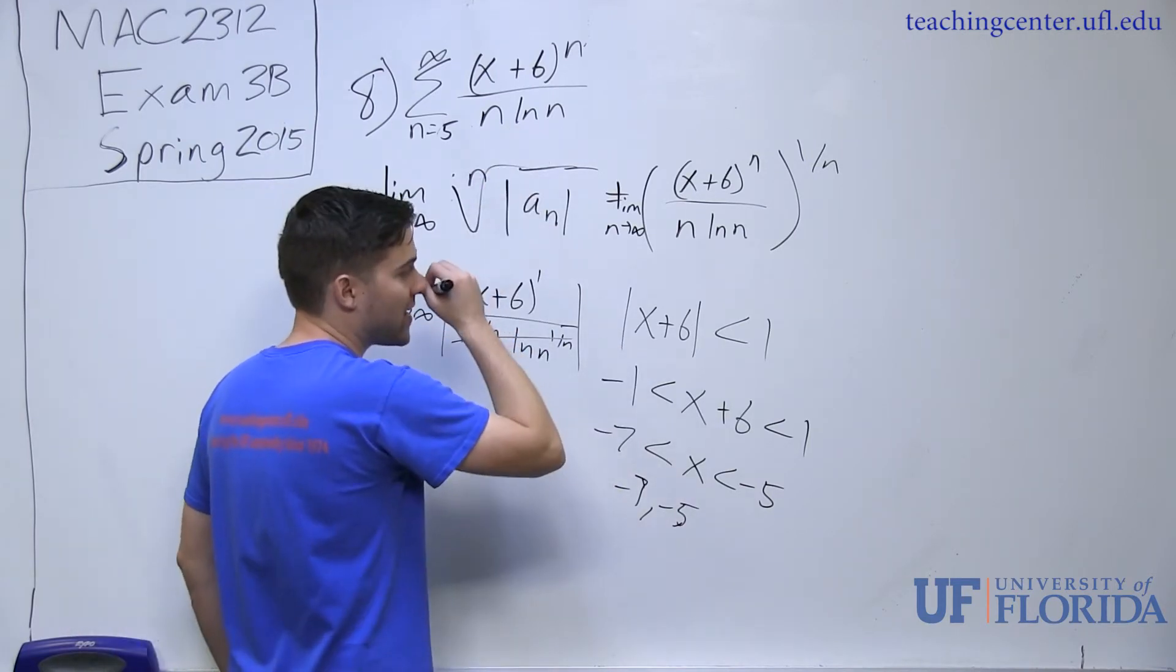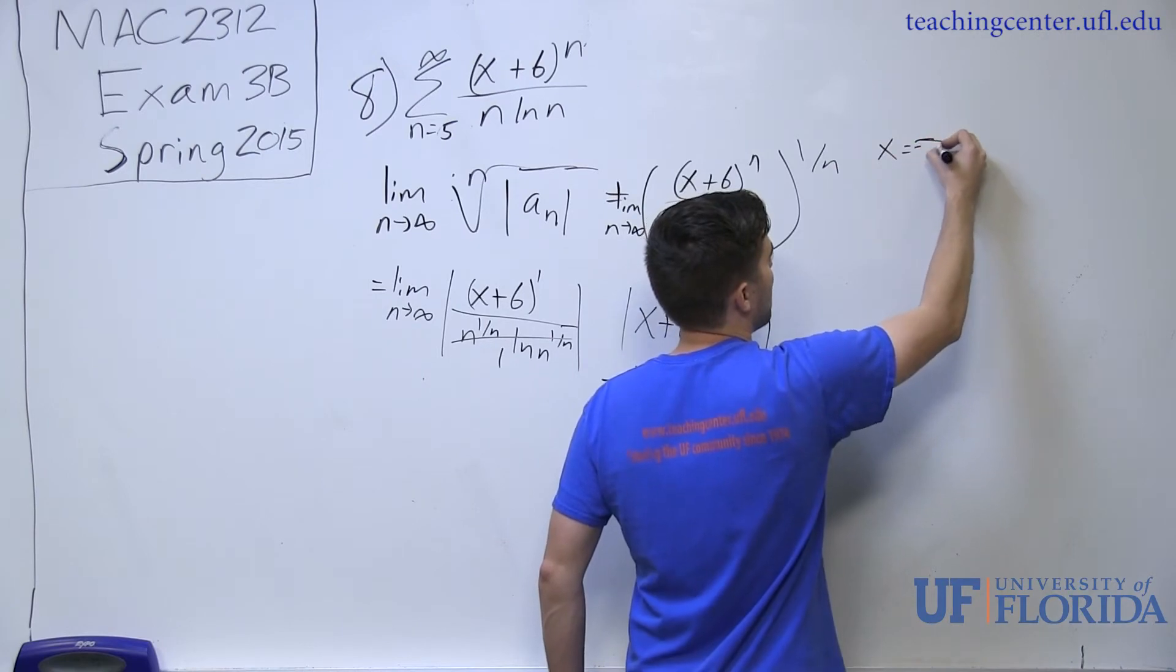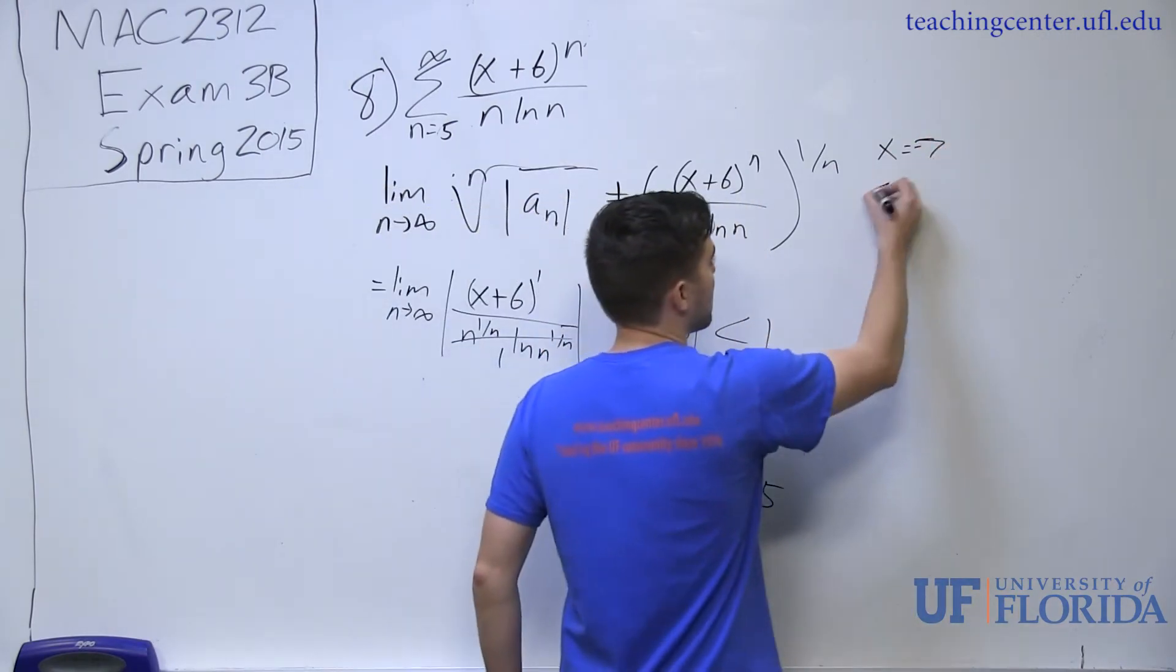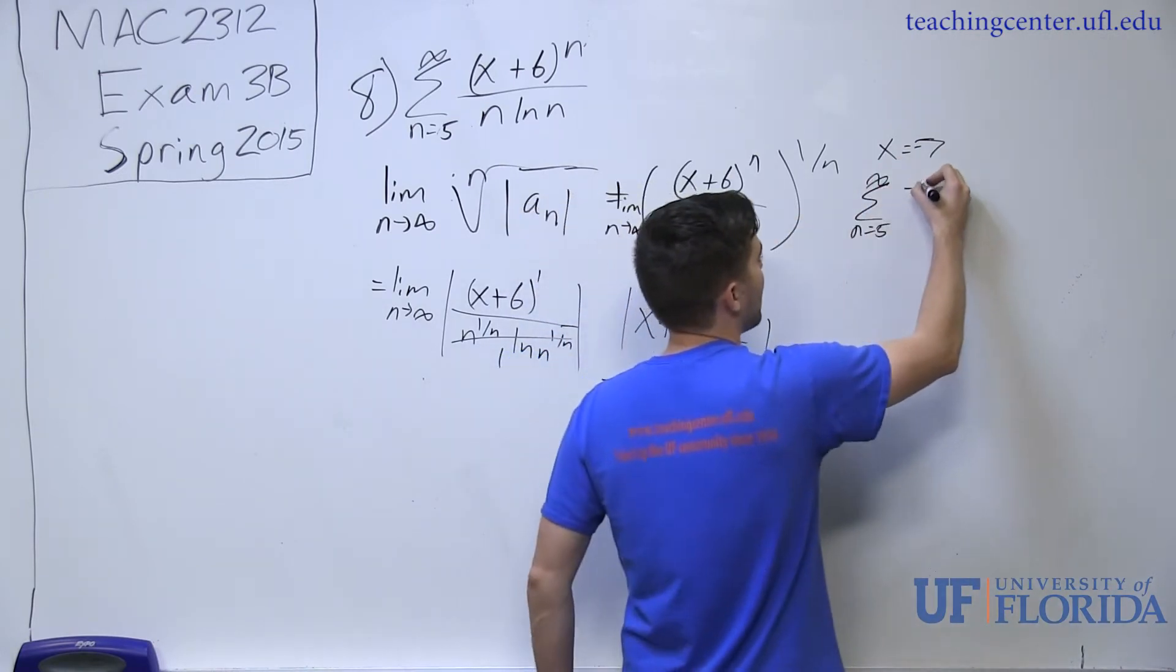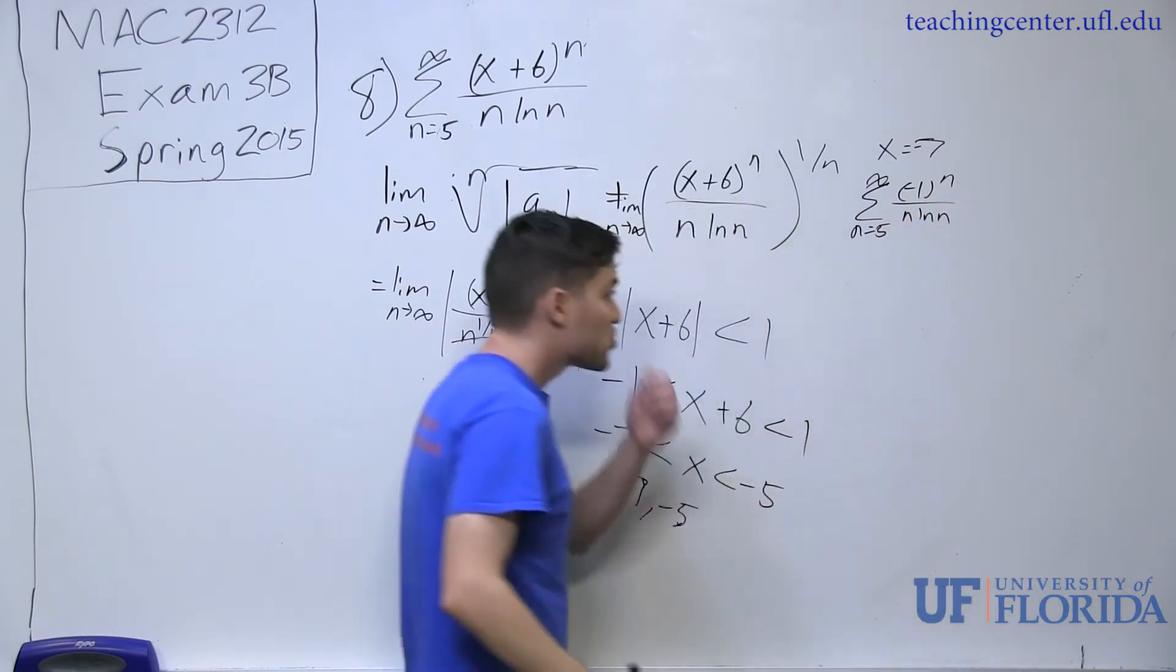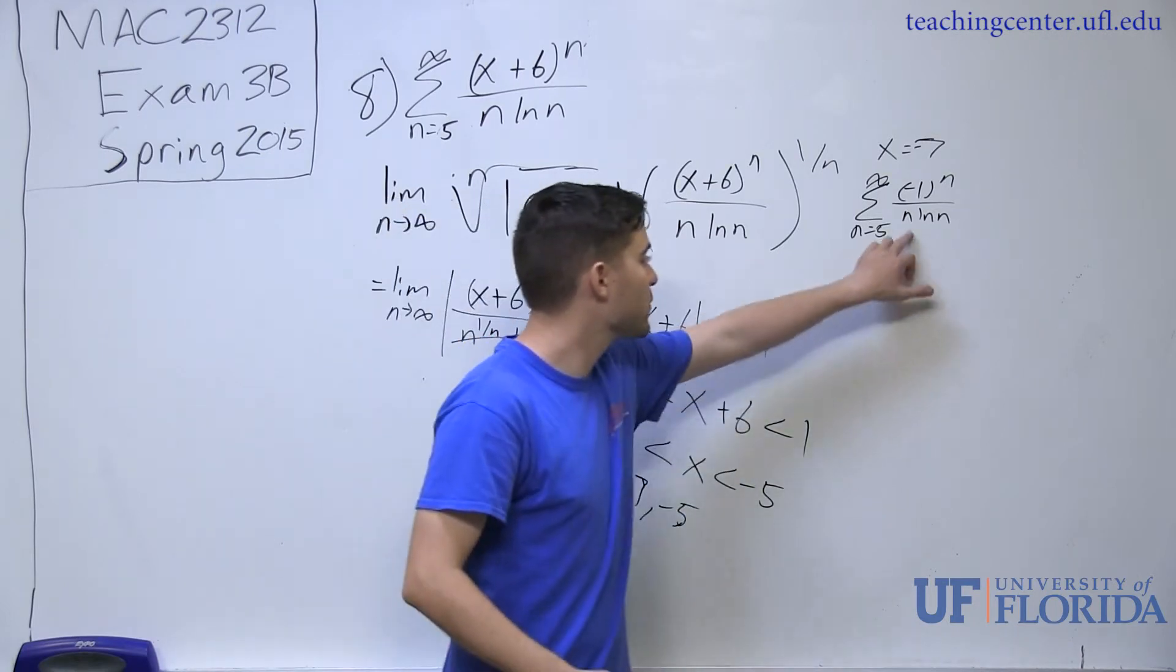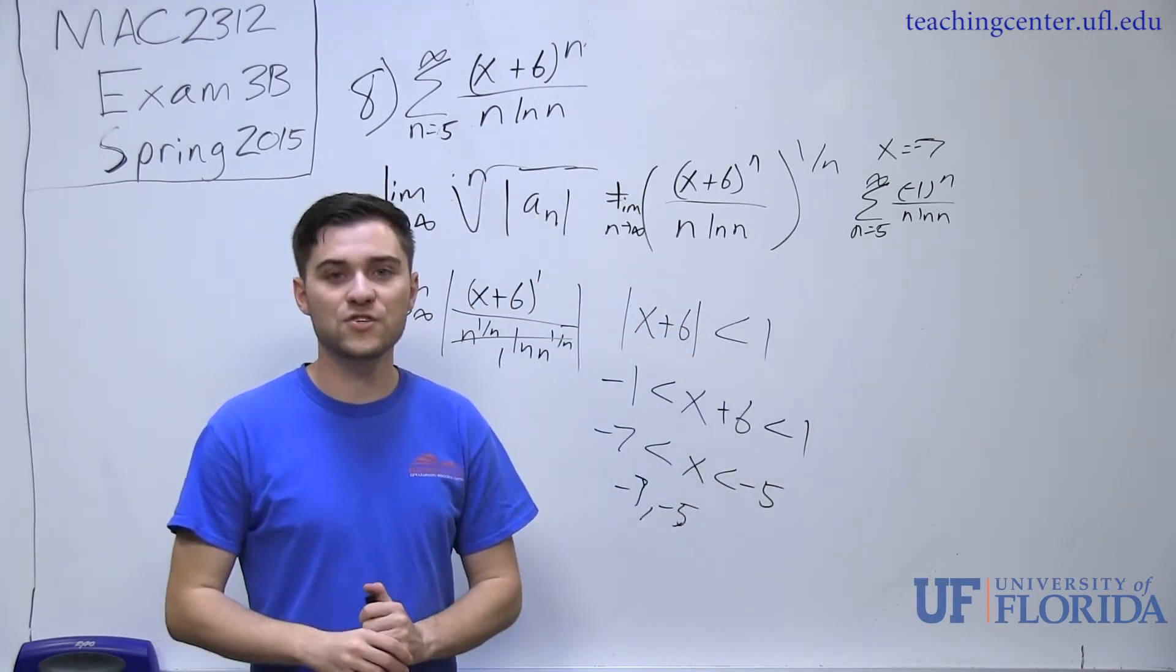These are x values. First off, I'm going to start by plugging in x equals negative 7. By plugging in x equals negative 7 into the series, I end up getting n equals 5 to infinity of negative 1 to the n divided by n natural log of n. It leaves me with an alternating series in this case. With an alternating series, I can actually apply alternating series test to it to figure out if it converges or diverges.